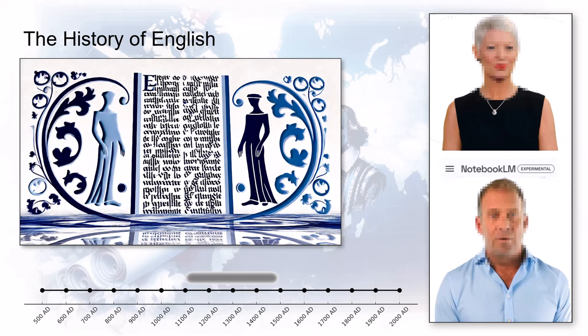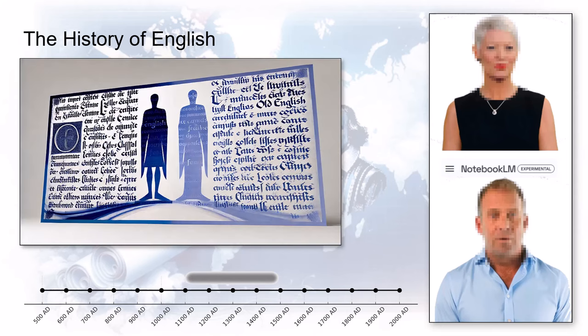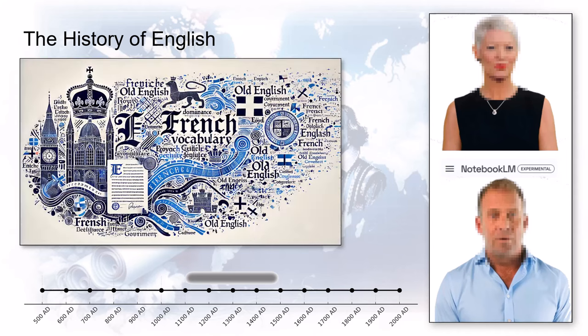So the language fights back by getting simpler — but it's not just about losing complicated grammar rules. English gets a whole bunch of new words too. Think: law, government, art — all those high-status things start using French words. Justice, parliament, even 'art' itself, all thanks to the Normans. It's like a whole new flavor got added to the mix.